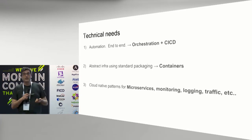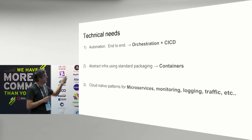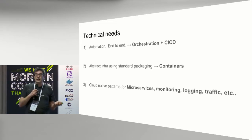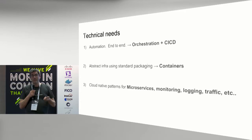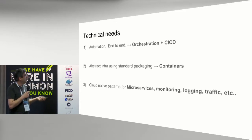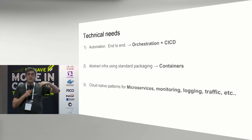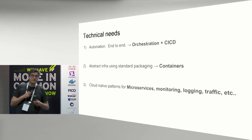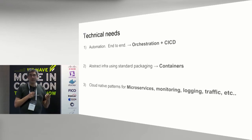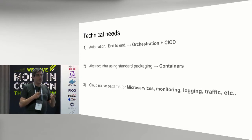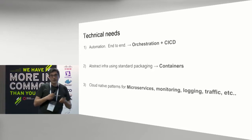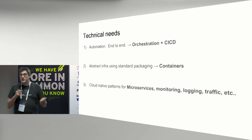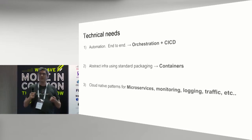To summarize our technical needs: automation, which leads you down the path of orchestration — orchestrating containers and scheduling them to make apps — and CI/CD, which is the automation of deployment. Abstracting the infrastructure from the app by standard packaging — hence containers turn out to be a solution. And cloud native patterns: how do you monitor, log, stay available, do alerts, fix things when they go wrong? What is a microservice anyway? A whole collection of these things.